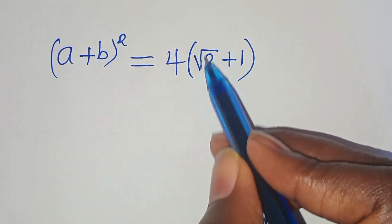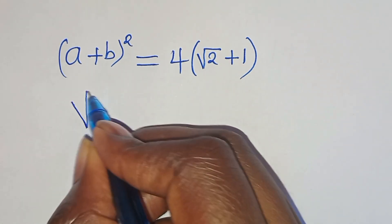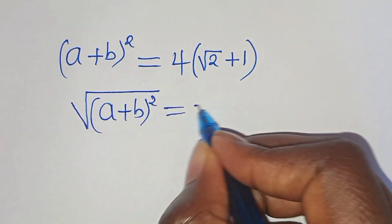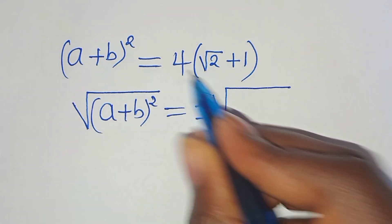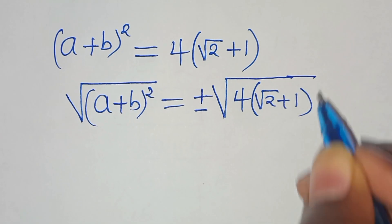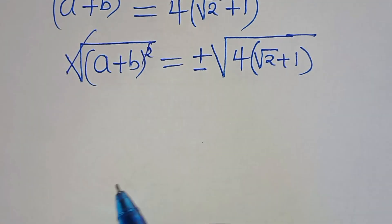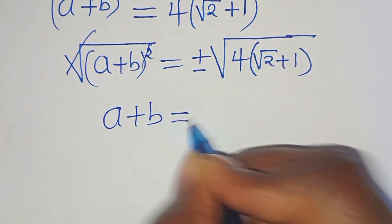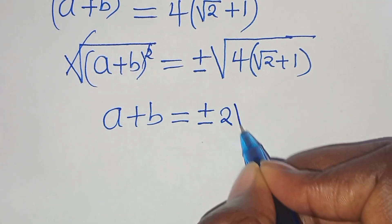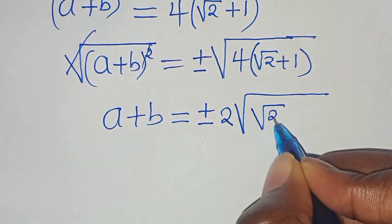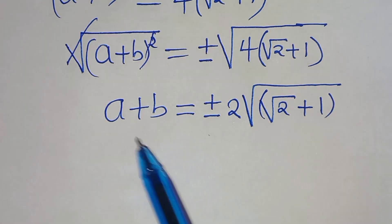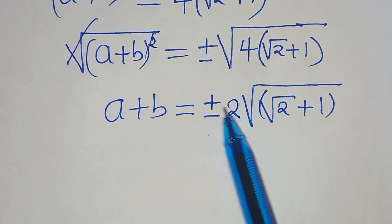So a plus b squared equals 4 times the quantity root 2 plus 1. Taking the square root on both sides, a plus b equals plus or minus the square root of 4 times root 2 plus 1, which simplifies to plus or minus 2 times the square root of root 2 plus 1. This is the first value of a plus b.